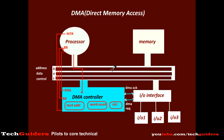A bus grant signal or hold acknowledgement signal to the DMA controller indicates that the processor has relinquished control over the bus and the DMA controller is now the master of the bus. Having got the bus, the DMA controller controls the data transfer between the memory and the peripheral by placing the address from the start address register onto the address bus and placing the control information onto the control bus. The data corresponding to this address is then transferred between the memory and the peripheral through the data bus.